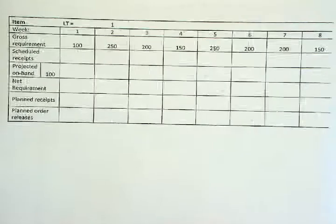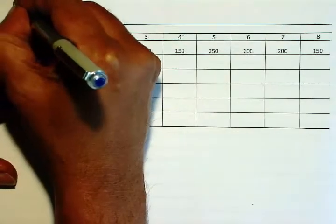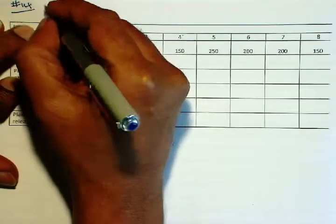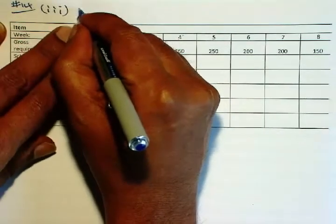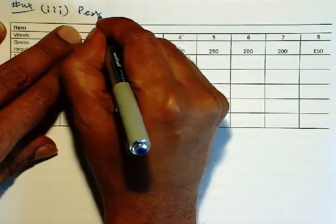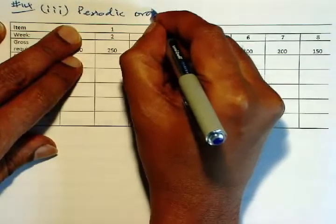Okay, next is continuing on problem 14. Number 3 is periodic order quantity.